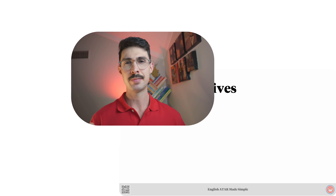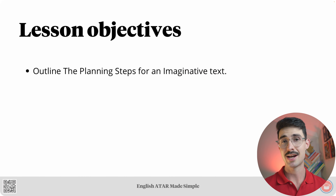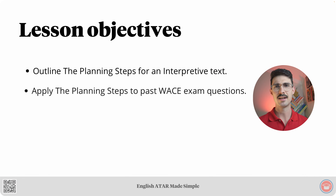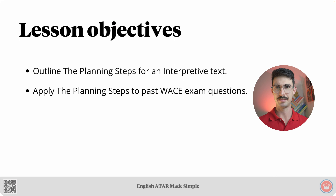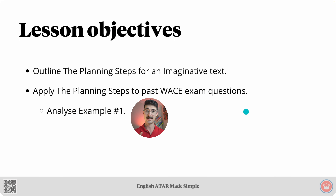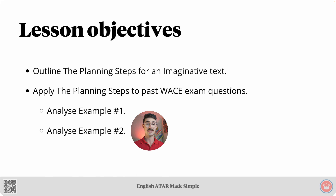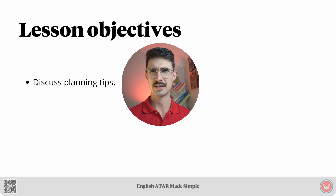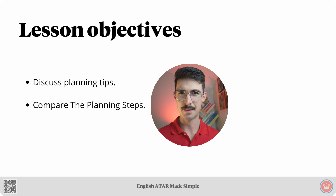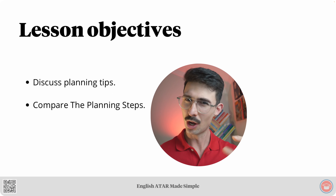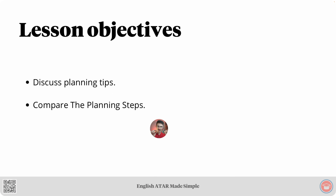Let's check out our lesson objectives. We're jumping straight into it by outlining the planning steps for an imaginative text. Once we've outlined those steps, we'll apply them to a couple of past WACE exam questions — specifically example one and example two. After that, we'll discuss a few planning tips, compare the planning steps, and top it off with a simple summary.